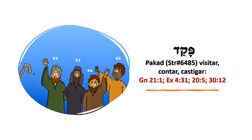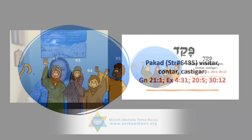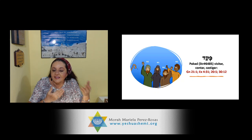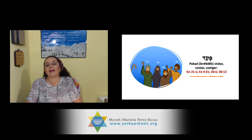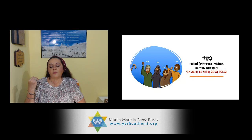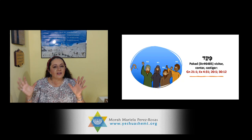El verbo, como ya les he enseñado, se presenta en raíz como pacat, P-Q-D. Este verbo se ha traducido de tres diferentes formas: visitar, contar y castigar. Ahora están entendiendo por qué le pregunté: ¿el Eterno te visita, te castiga o te cuenta? Siempre que les enseño un verbo hebreo, les pongo los pasajes y las concordancias Strong para que puedan comprobar con las Escrituras todo lo que les enseño.